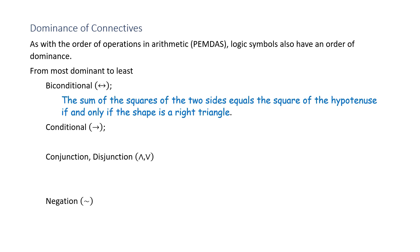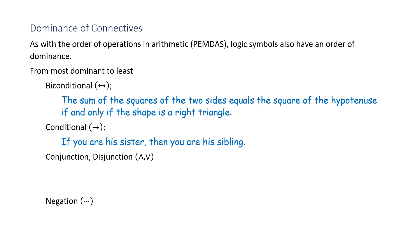The next most dominant is the conditional. Example: 'If you are his sister, then you are his sibling.' Notice that the opposite direction is not necessarily true — if you are his sibling, then you are his sister could be wrong, because you could be his brother.